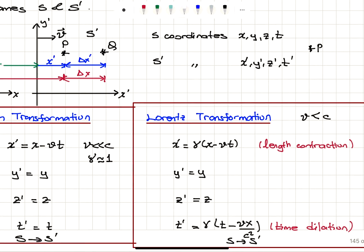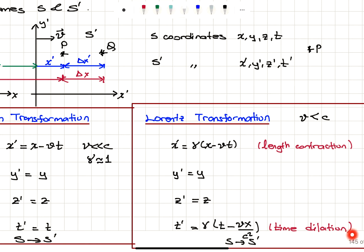How do we correct these equations to take into account length contraction and time dilation? When the speed is comparable to the speed of light, we have to consider the relativistic correction. X prime equals X minus Vt is modified to be X prime equals gamma times X minus Vt. Y prime is Y, Z prime is Z. Most importantly, time is not absolute in the Lorentz transformation. T prime is gamma times T minus Xv over C squared. So you can see that time is related to space as well.